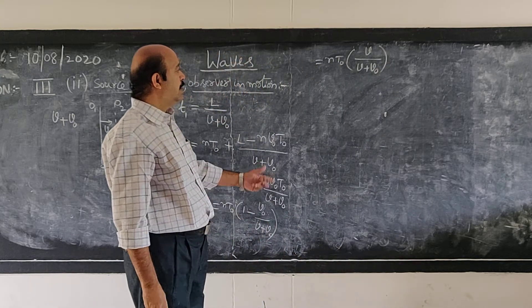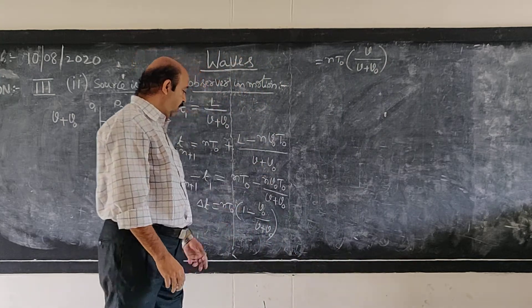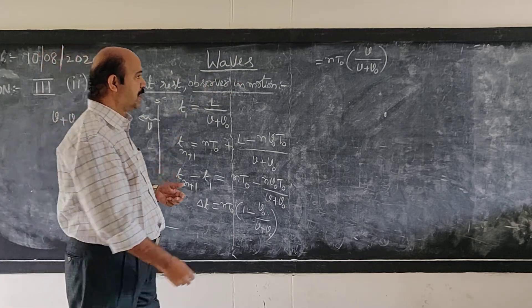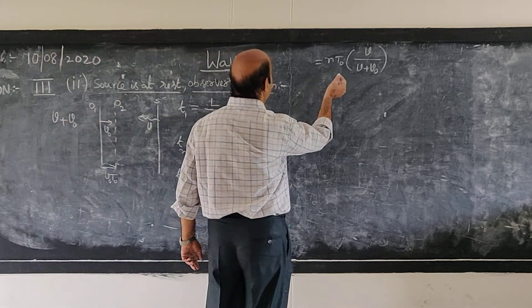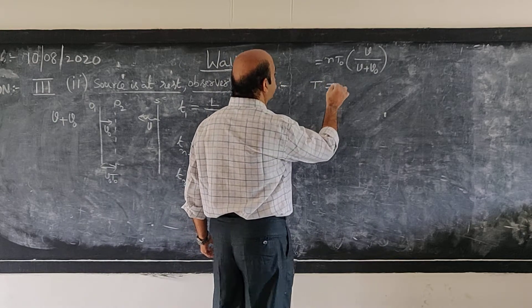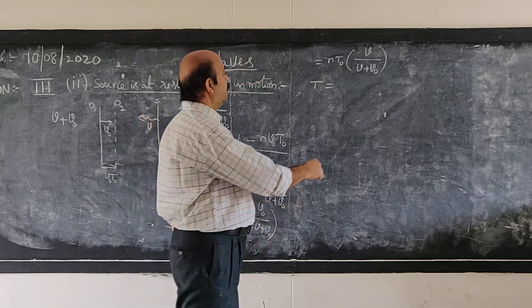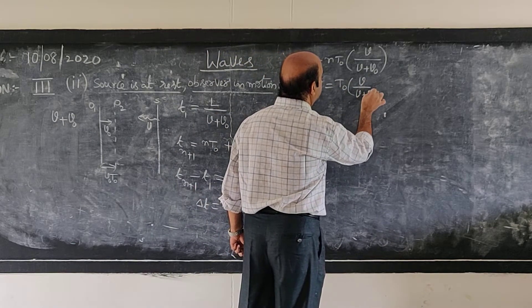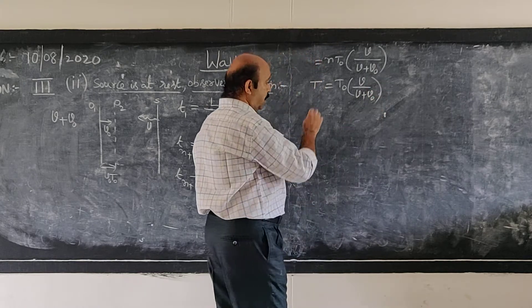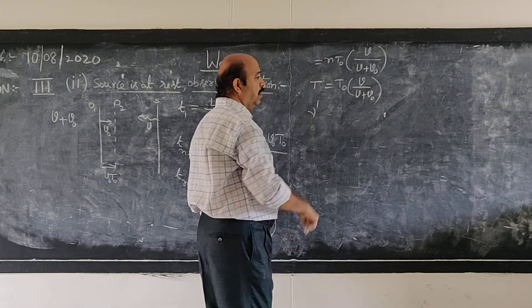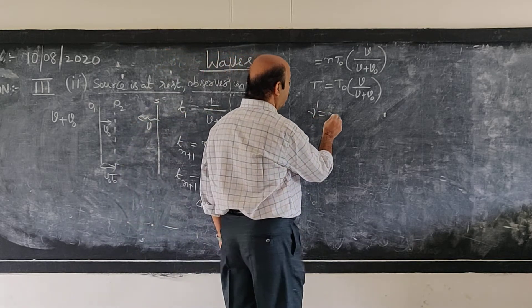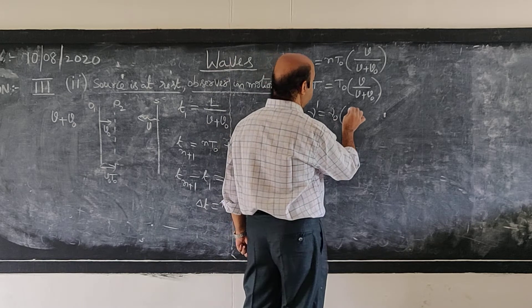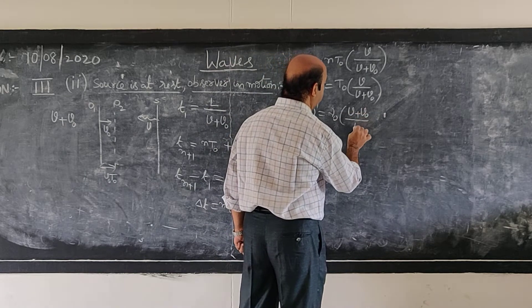So that is the apparent time for the observer to receive N crests. Time taken for one wave — the apparent time period — is given by T0 into V by V plus V0. The reciprocal of that is nothing but the apparent frequency.